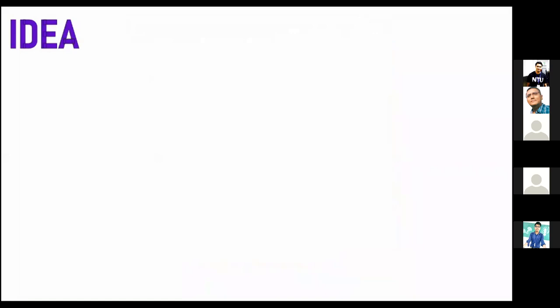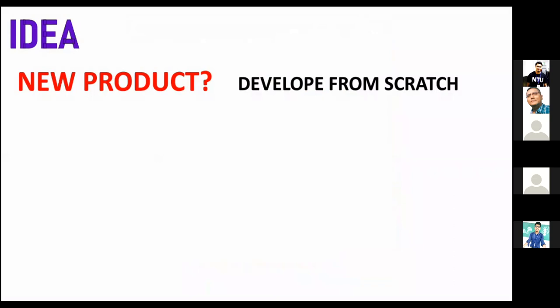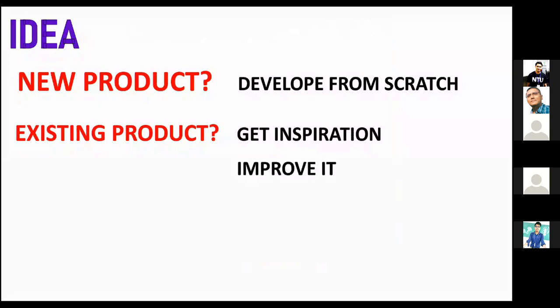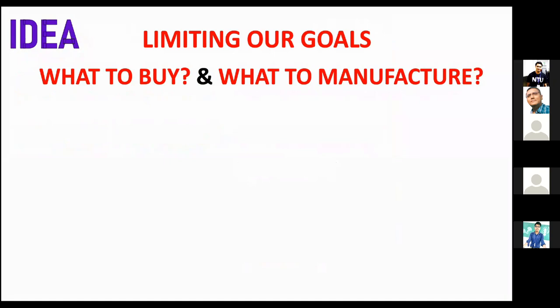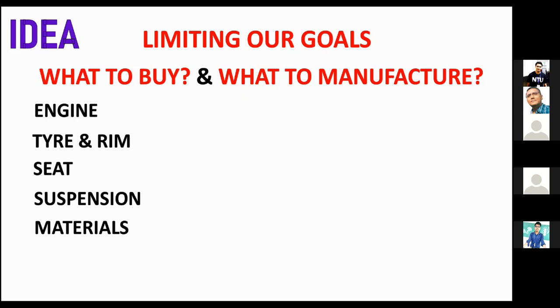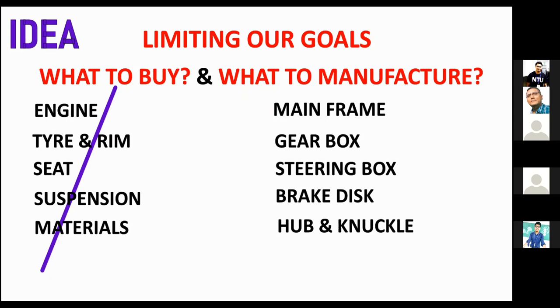As an example, I will use this off-road sport vehicle which I did with my friends a few years ago. Let us start from creating an idea for the product. If it is a new product, we need to develop it from scratch. But if it exists, we can get inspiration and improve it by fixing its downside. To save time, we can decide what to buy and what to manufacture. Items like engine, tire, rim, seat, suspension, and other raw materials were bought for our off-road vehicle — so we need not spend time designing and testing these items.